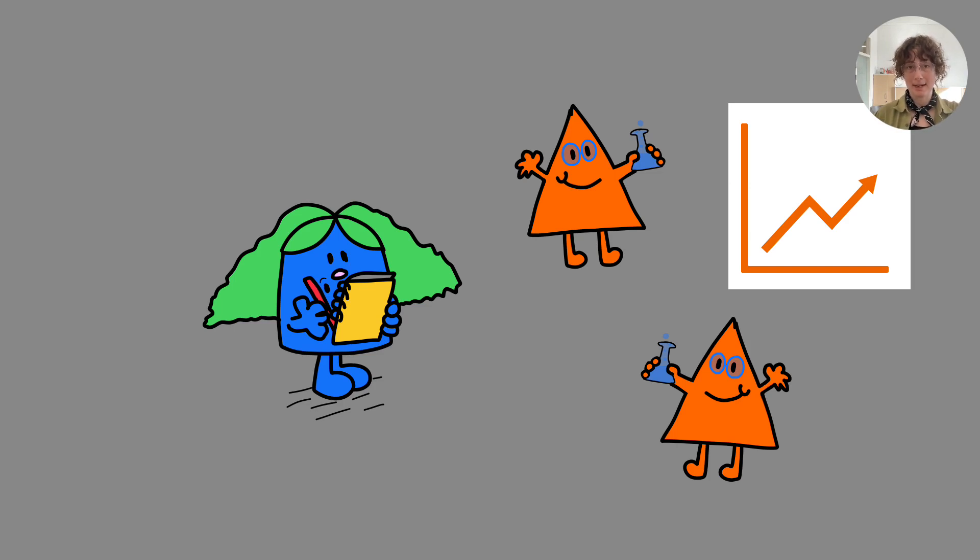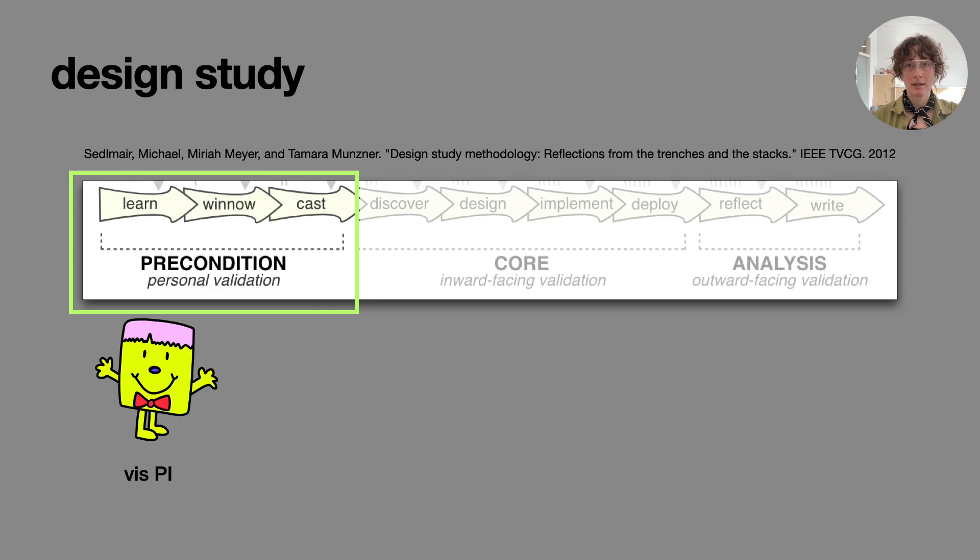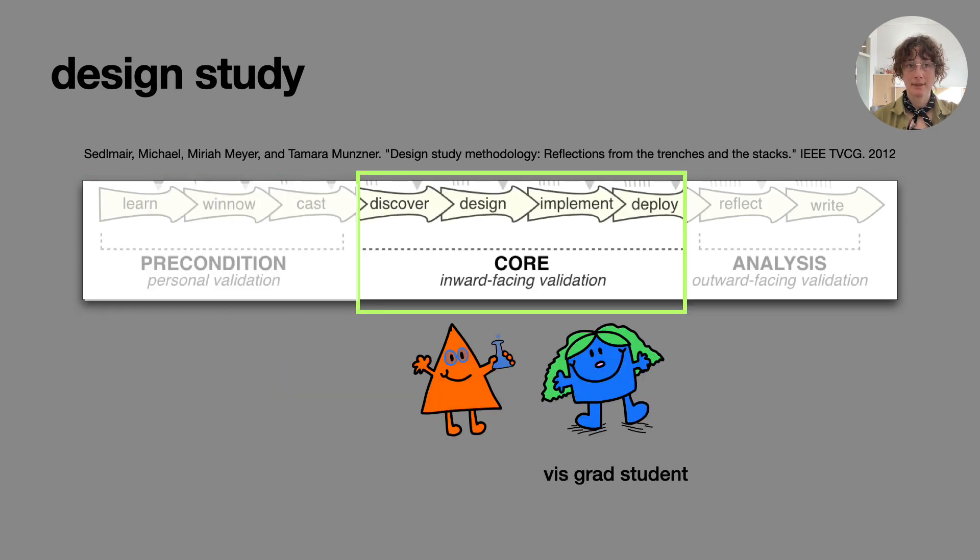This way of collaborating with domain experts is common in visualization research and goes by the name Design Study. This is a commonly used process model from Sedlmayer and colleagues, and is a good example to represent how these collaborations work in the world. It starts off with a visualization PI establishing a collaboration with domain experts. Then the Viz grad student goes off to learn about the domain problem. During this core period of discovery for the grad student, there's a lot of upfront time and commitment given by the collaborator. They often prepare and share datasets and help the Viz student understand their domain. The domain experts often have years, even decades of experience, so the knowledge gap is quite large.